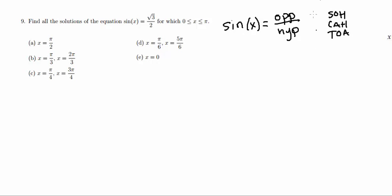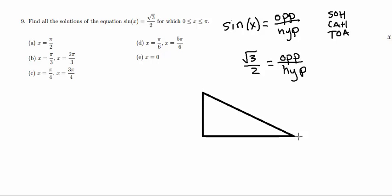Okay, so going from there, we know that since the sine of x is equal to root 3 over 2, root 3 is equal to the opposite side, and 2 is equal to the hypotenuse. So let me go ahead and draw a triangle. So now, let's go ahead and label our sides.